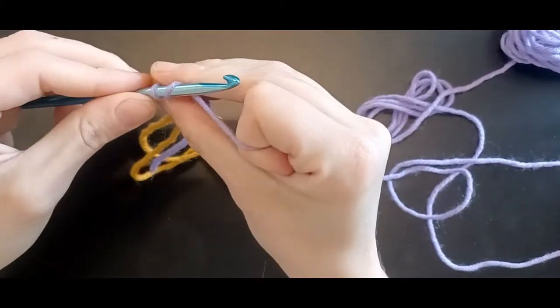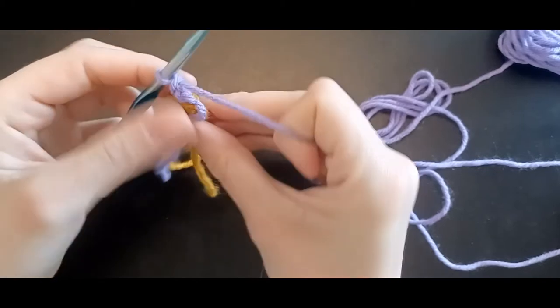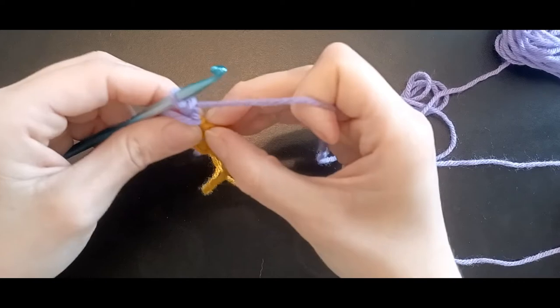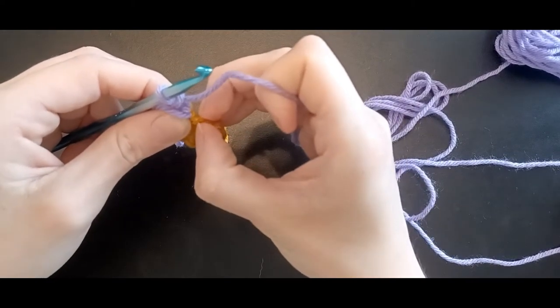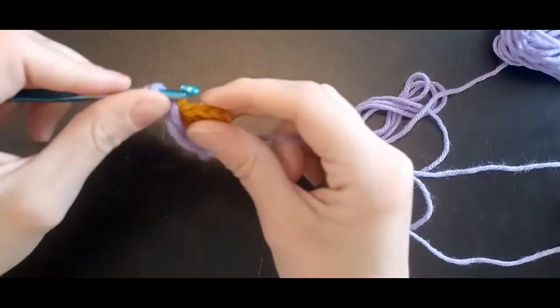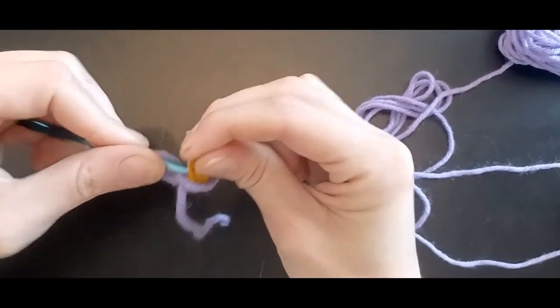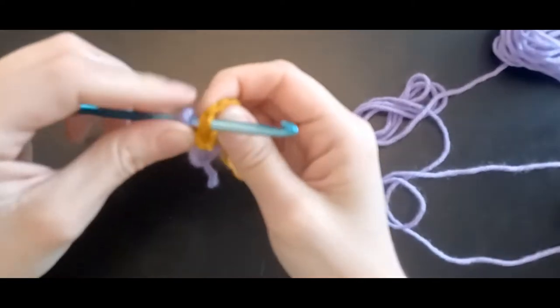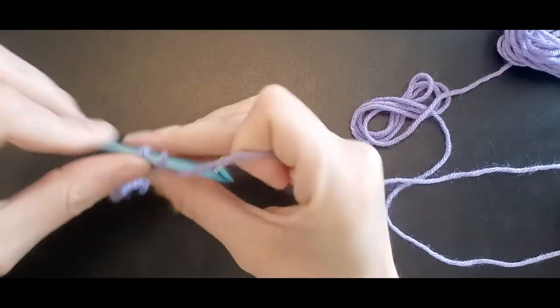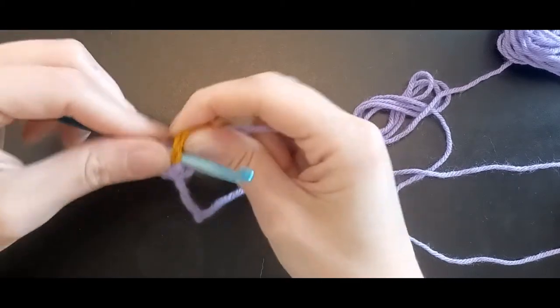One, two. You're going to want to do two double crochets in that same stitch where you just did your chain. So yarn over, go into that same stitch. The first stitch that you just slip to, yank the way into it. We're going to do the first stitch and you're going to pull through, and then you're going to pull through two, yarn over, pull through two.